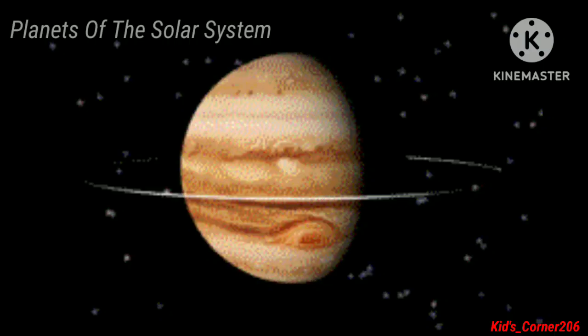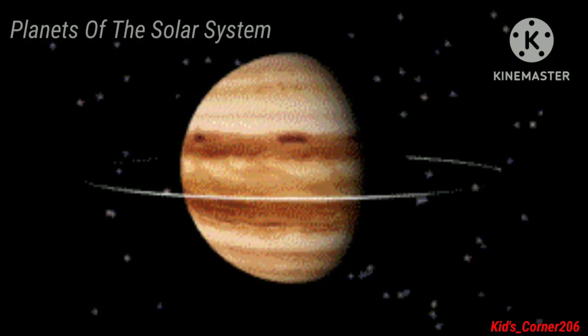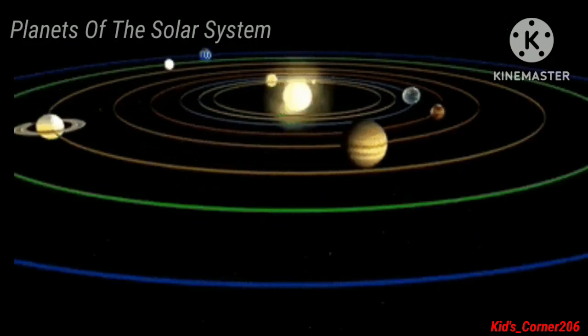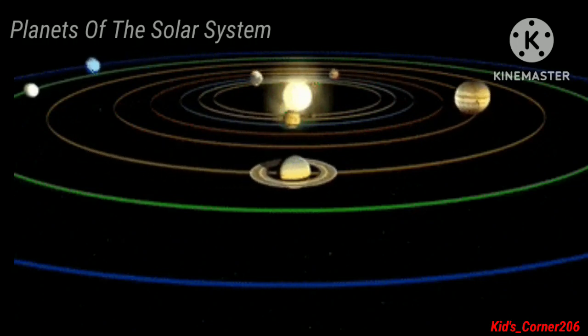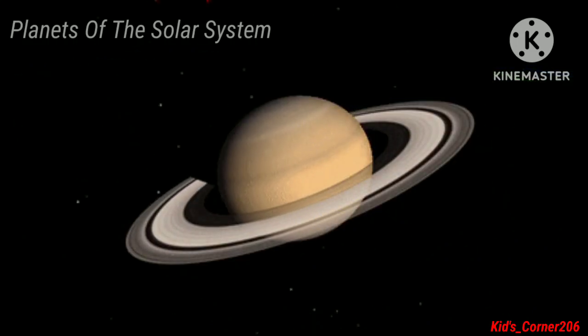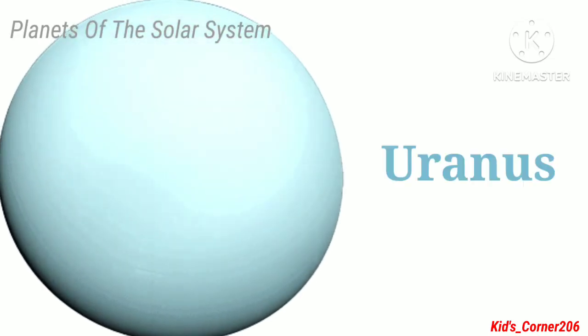Saturn is the second largest planet in the solar system and it is yellowish in color. It has beautiful rings around it that are made up of ice and dust.